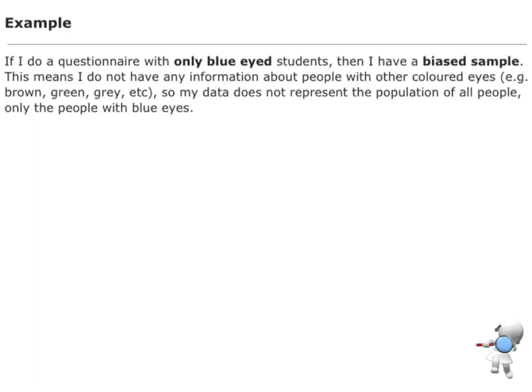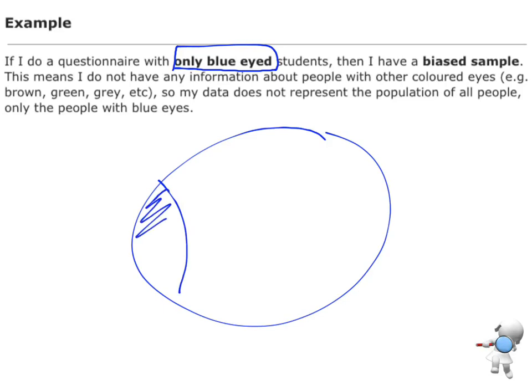A different example is if I do a questionnaire with only blue-eyed students, then that is a biased sample because I don't have any information at all about people that have different colour eyes. It means I've got information about one group of my population—I know about all these people over here who have blue-coloured eyes, but I know nothing about the rest of that group, the rest of my population.